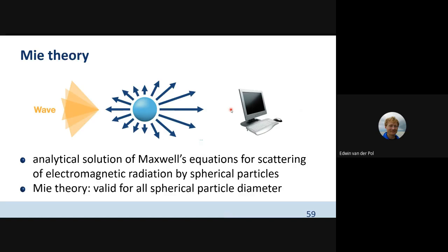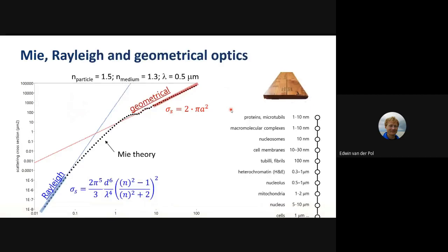Mie theory solves Maxwell's equations for scattering of electromagnetic radiation by spherical particles. In practice we use a computer because otherwise it's too much work. Mie theory is valid for spheres of all diameters relative to the wavelength of light. Now that we have access to Mie theory, we can compare it to the Rayleigh approximation and geometrical approximation. This graph shows scattering cross-section in micrometers squared versus particle radius.